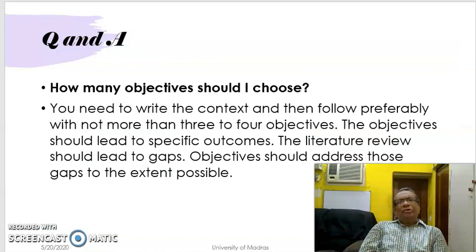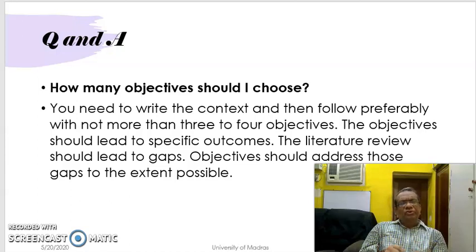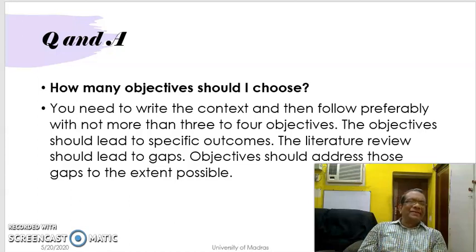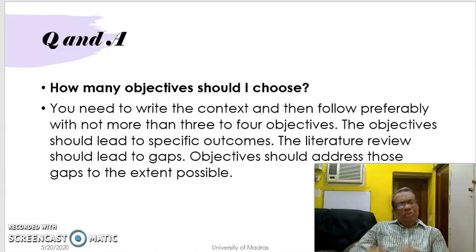One other question that generally comes through the mind in project proposal writing is: how many objectives can I have? The objectives should not be broken down into smaller and smaller segments — such as finding out demographic characteristics, finding social characteristics — but should be clearly given in one single sentence.